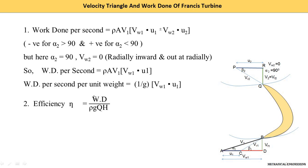Next is efficiency — efficiency equals output upon input. Our output is the work done, and the input is the hydraulic energy supplied, written as rho g Q H. Putting work done (rho A V1 × VW1 × U1) divided by rho g Q H, rho cancels top and bottom, and area times velocity equals Q so Q also cancels. This gives efficiency equals VW1 × U1 divided by g H.